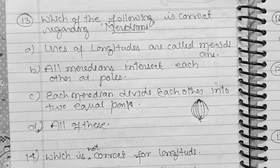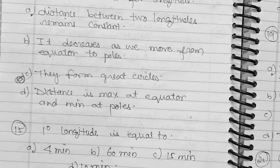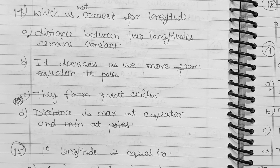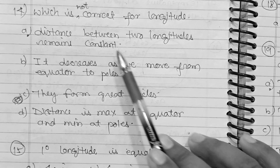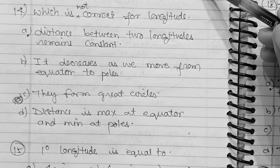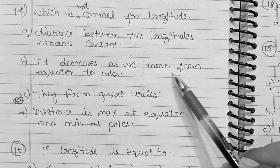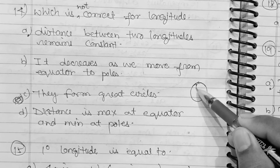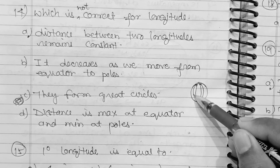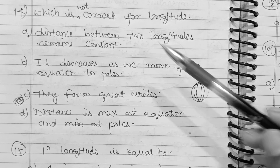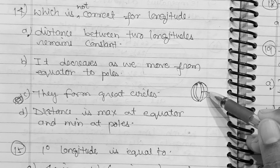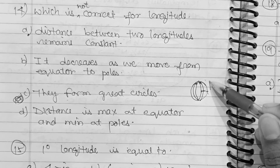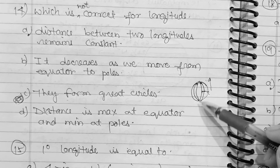Question 14: Which is NOT correct for lines of longitude? Option A states that the distance between two longitudes remains constant everywhere. This is incorrect — the distance decreases as we move from the equator towards the poles. So option A is the answer to 'which is not correct.'